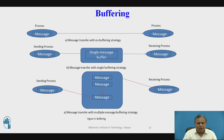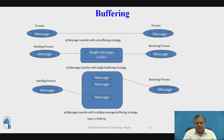This is the diagram of buffering. In A, message transfer with no buffering strategy requires one copy operation. In B, message transfer with a single buffering strategy requires two copy operations — the message goes from the sending process to a single message buffer, then to the receiving process. In C, message transfer with a multiple message buffer strategy allows the sending process to send to a multiple message buffer, which is then transferred to the receiving process.